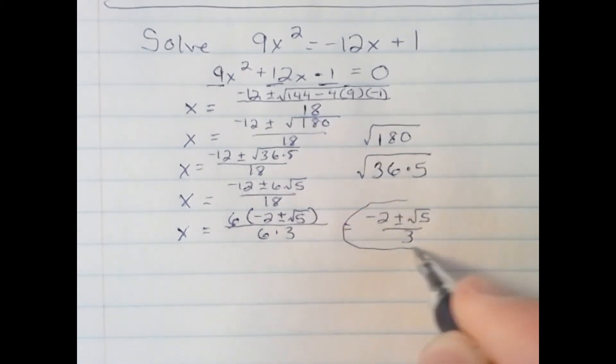Keep in mind this is two answers. Negative 2 plus radical 5 over 3, and negative 2 minus radical 5 all over 3.